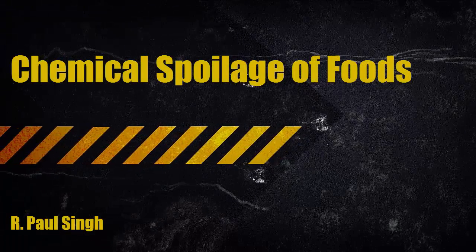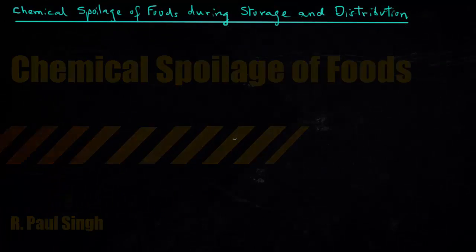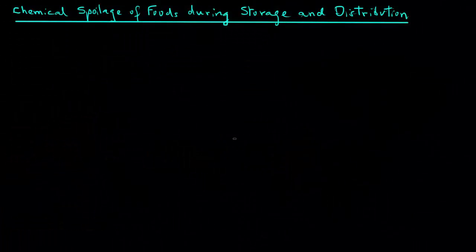In this tutorial, we will look at the chemical spoilage of foods during storage and distribution. Chemical and biochemical changes occur in foods during storage and they are generally undesirable, except in very few instances, such as aging of wine, cheese, or ripening of fruits.